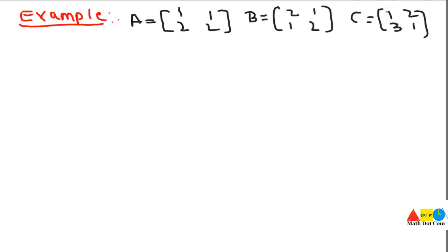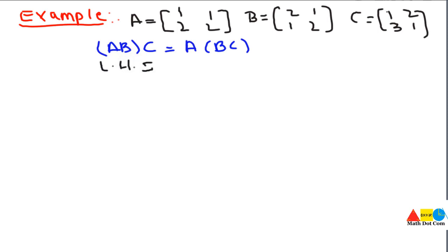Let's have an example. If you are given three matrices, we are going to multiply them using the associative law of multiplication. Let's write down the form: we have two sides, the left-hand side and the right-hand side. We can use any of them — the answer will always remain the same. It doesn't matter whether you are multiplying B and C first or A and B first.